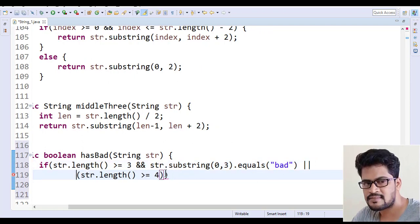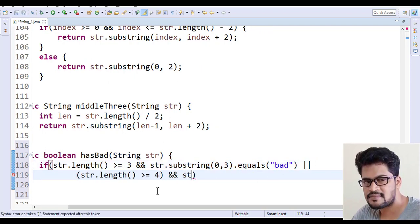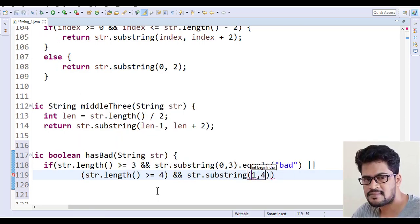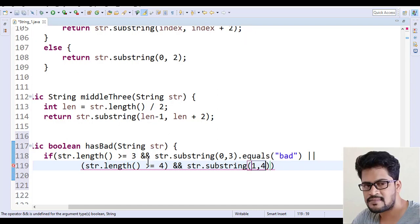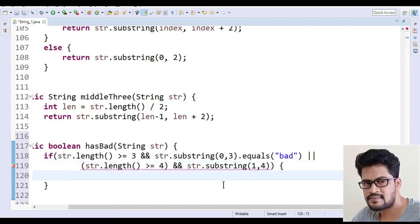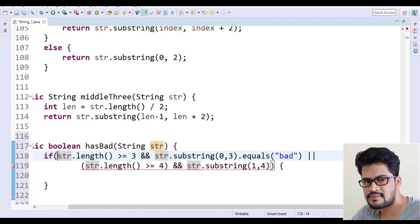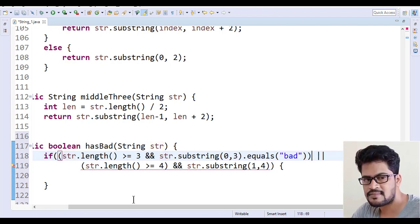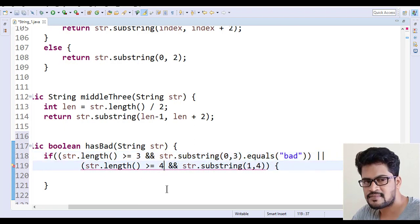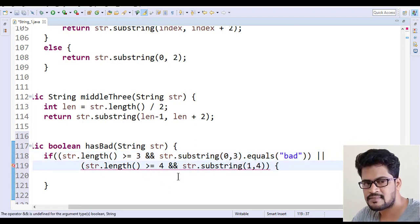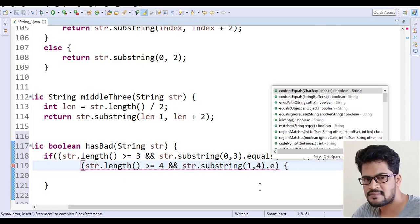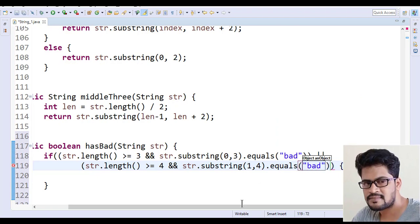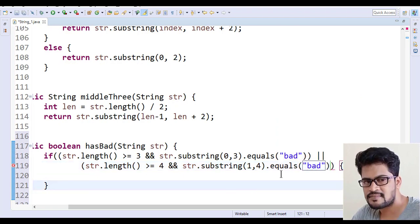Or one more thing: str.length() is greater than or equal to 4, let me make it on the next line, and str.substring(1, 4). Still you get some error, I think you need to add one more bracket. And what about this? You must not add here.